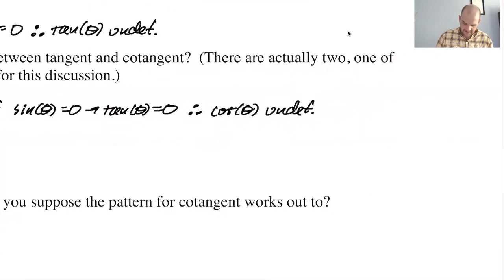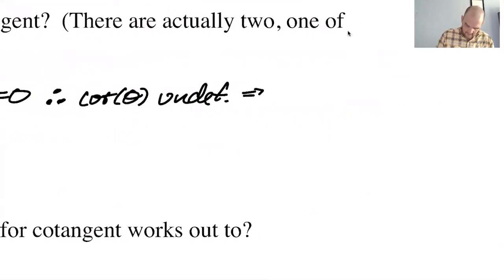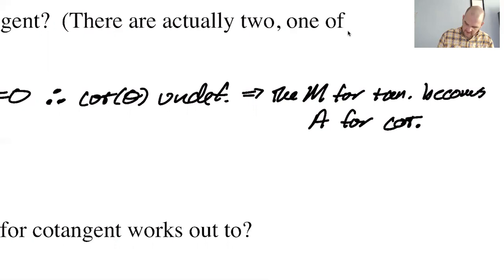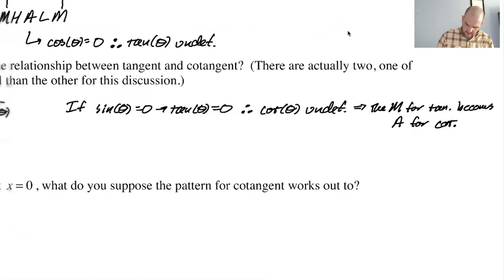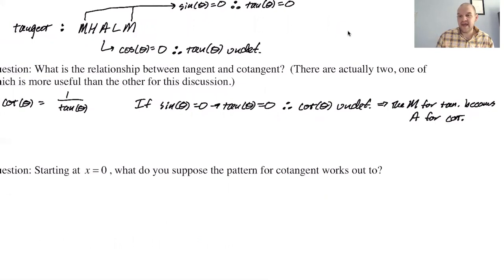So that means that the M for tangent becomes A for cotangent. I'm kind of answering the next question also, but the M for tangent is going to become the A for cotangent because tangent is at the middle point because tangent is zero. The reciprocal is zero undefined, so you're going to get your asymptotes.